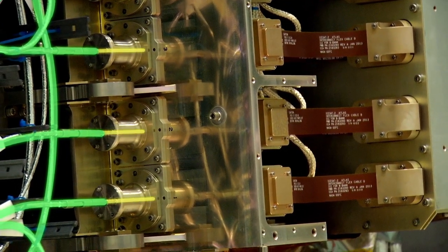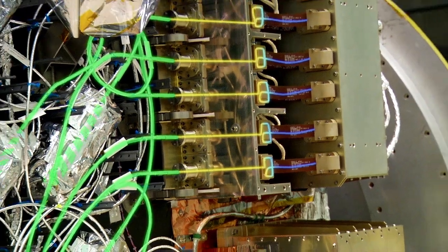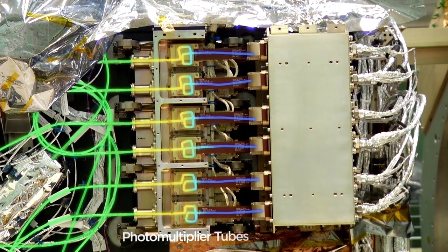So the photons now go to the PMT detectors, which are the photomultiplier tubes, where the photons are converted to electricity and timed.